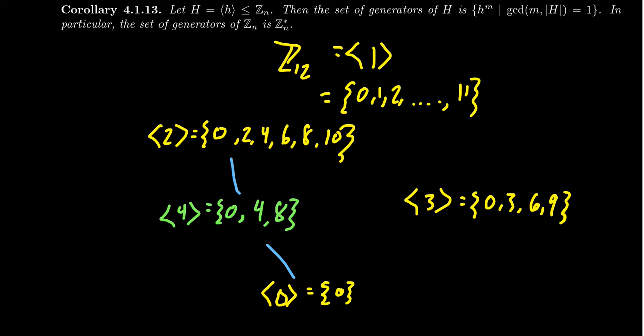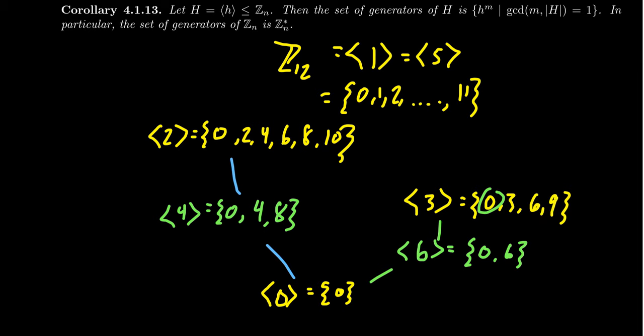The subgroup generated by 5: adding 5 repeatedly gives 5, 10, 3, 8, then 8 plus 5 is 13 which reduces to 1. Once you reach 1, you get everything — the subgroup generated by 5 is the entire group. Indeed, 5 is the first number besides 1 that is coprime to 12, just as predicted. For 6: 12 divided by 6 is 2, so the subgroup generated by 6 has order 2, containing 0 and 6. It is contained in both the subgroup generated by 3 and the subgroup generated by 2. This accounts for all of the subgroups.